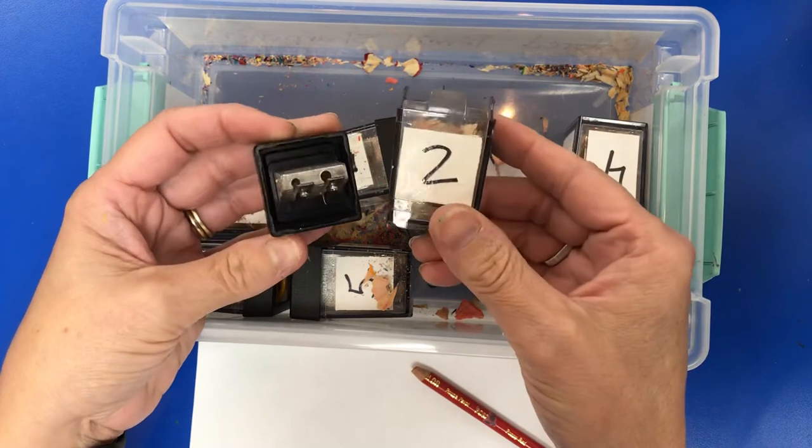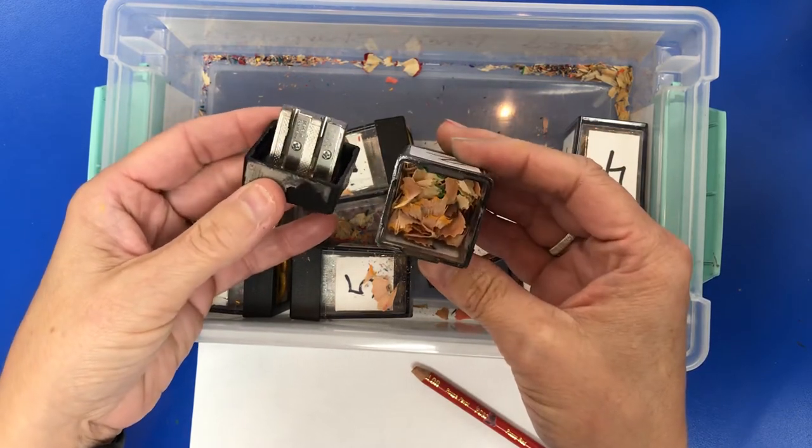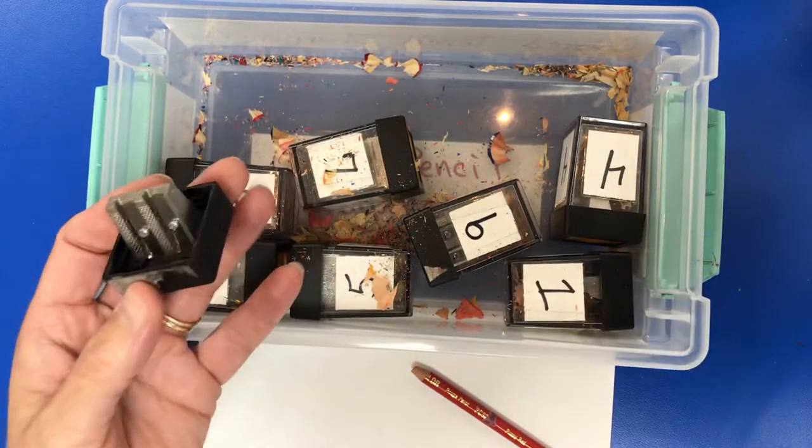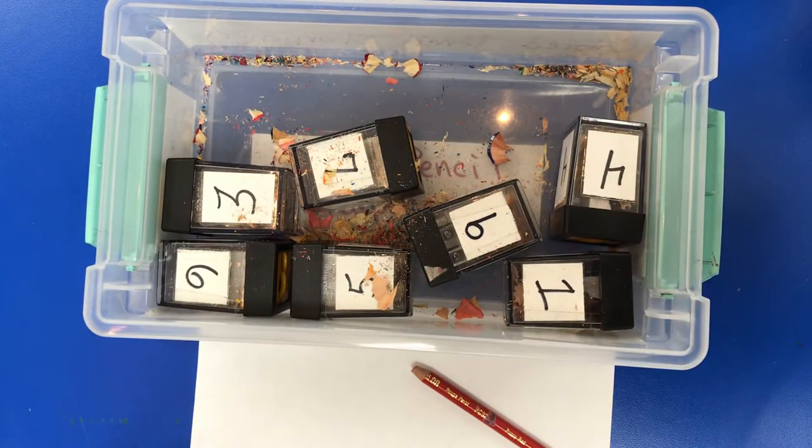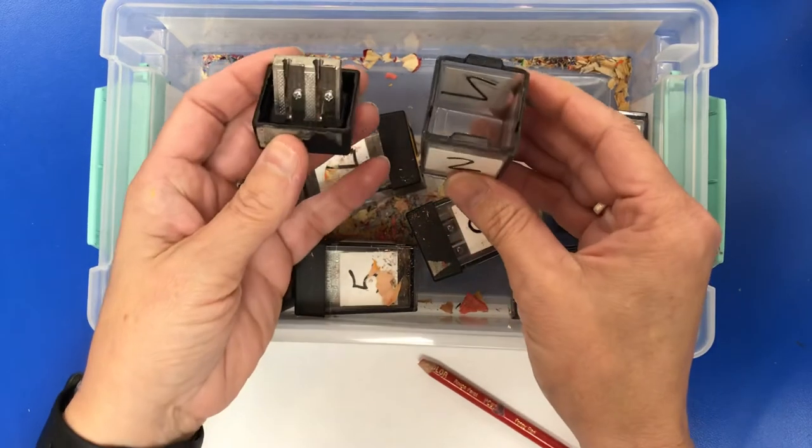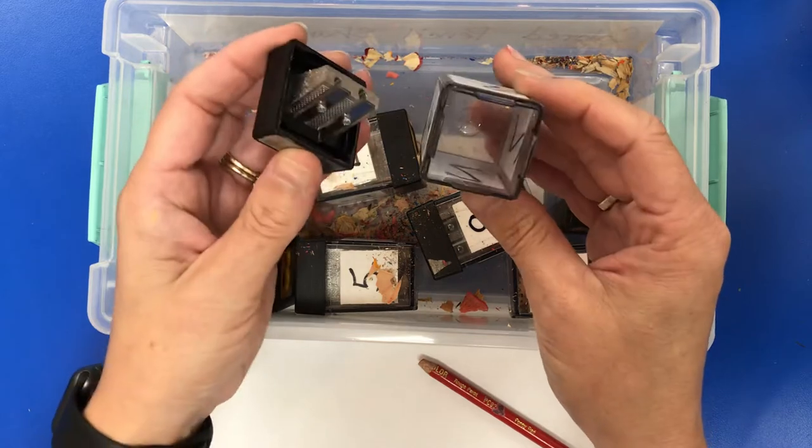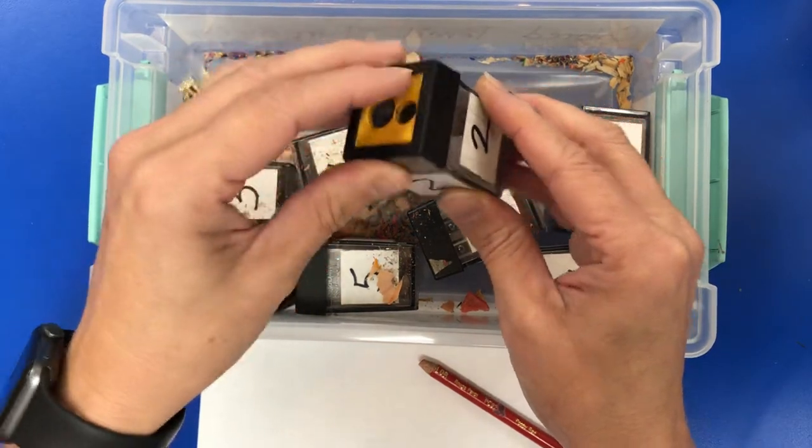Make sure when you're done for the day that somebody who's in charge of supplies at your table takes the colored pencil sharpener and brings it over. They throw the pencil shavings in the garbage, not recycling, but in the garbage with the liner. Make sure it's nice and clean, then put the cap back on.